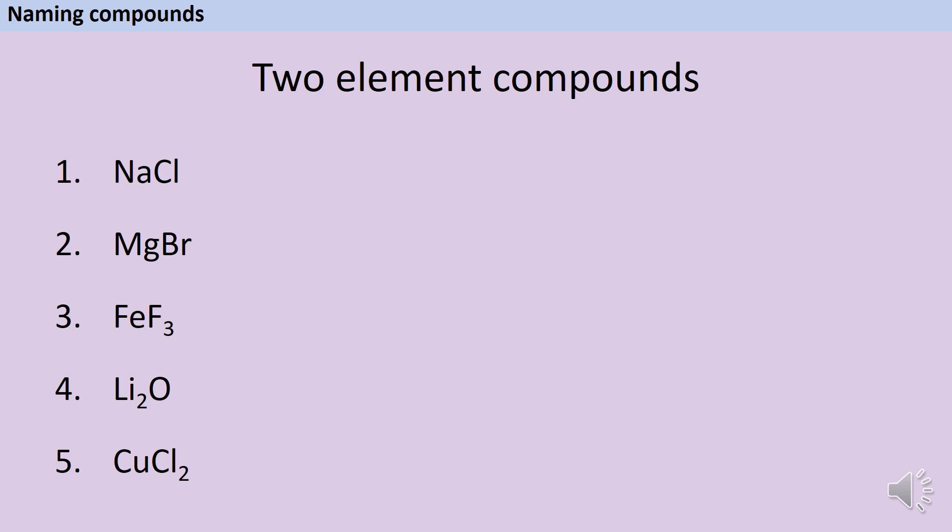Here are five examples for you to have a go at. In order to name these, you need to know which element each symbol represents. So you may need to use a periodic table to look this up. For instance, NA in question 1 represents sodium. Pause the video and write down what you think the name of each compound is.